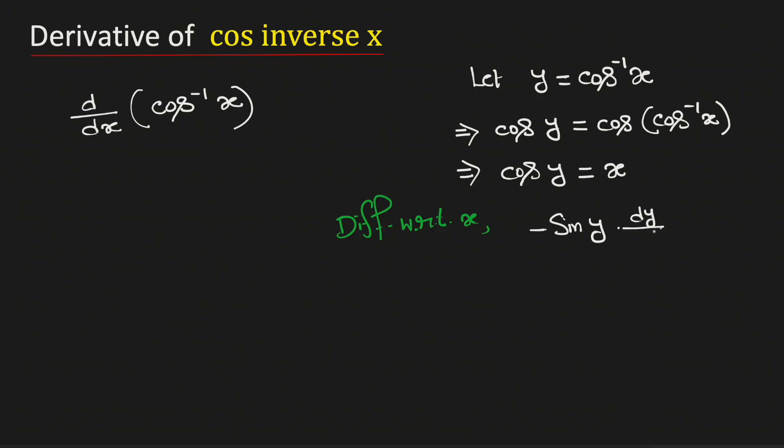This is obtained by the chain rule of derivatives. And the derivative of x with respect to x is 1. From here we get dy dx is equal to negative 1 over sine y.